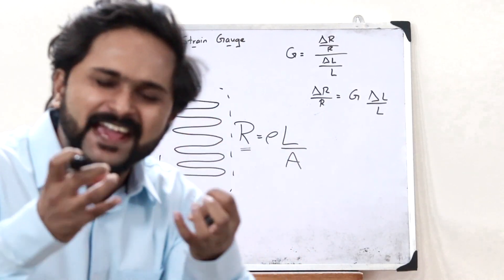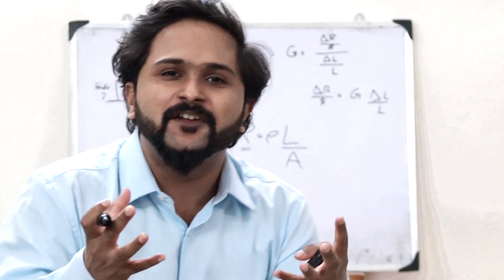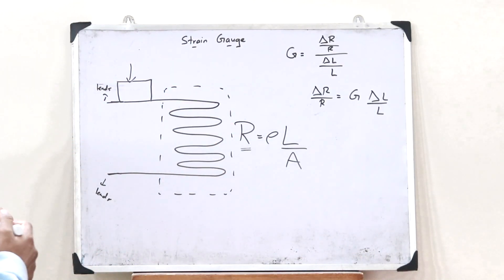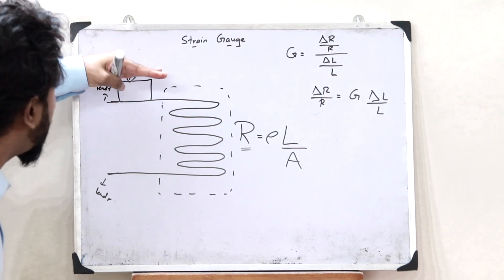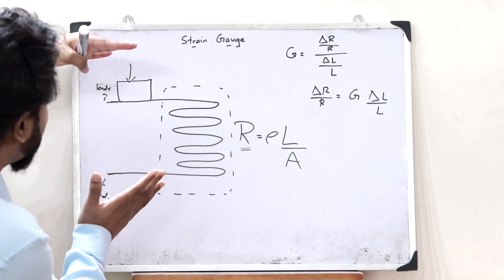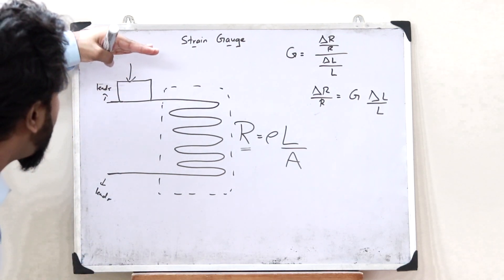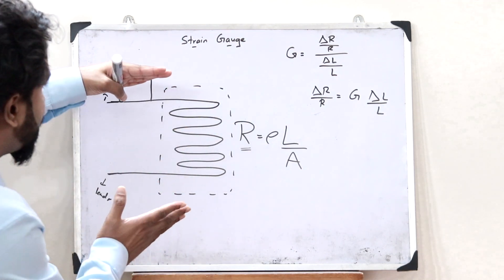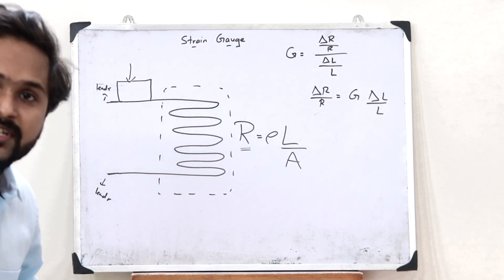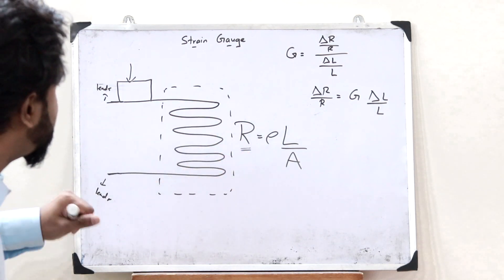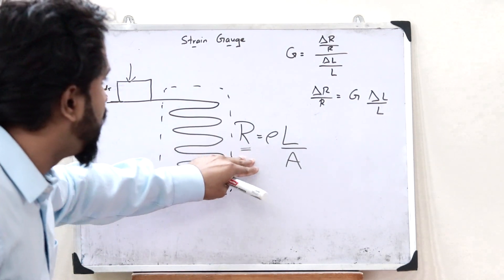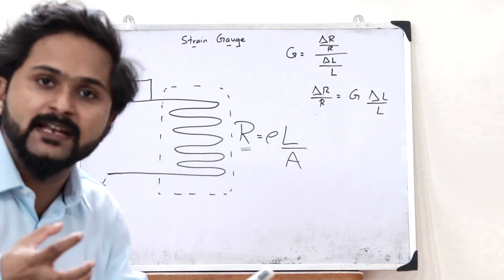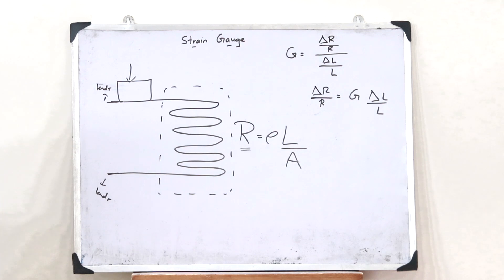This is the basic principle of a strain gauge. When we apply a deforming force on a particular object, the object gets deformed, and as a result the coil also starts getting deformed — it gets compressed. Because of the compression, the length and area of cross section change, and therefore the resistance changes. This change in resistance can be used to find the strain present on the object.